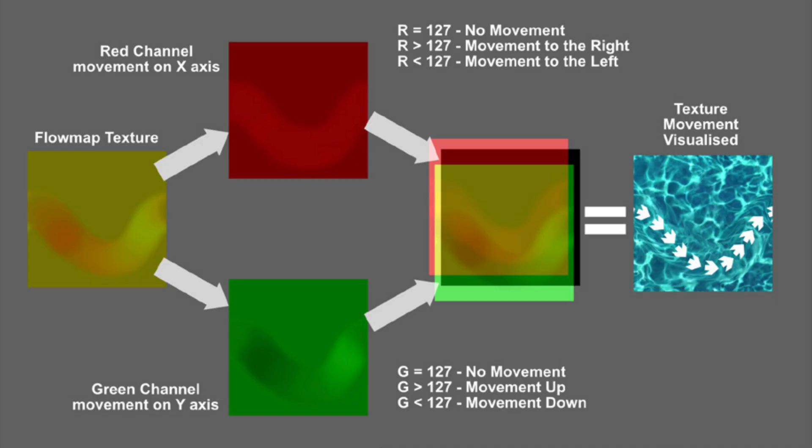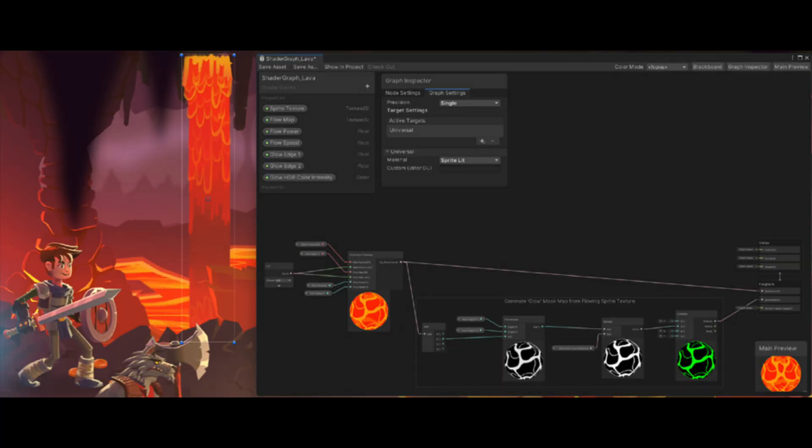Flow maps are textures that store directional information. The shader uses the flow map texture to control the direction of the main texture's UV coordinates. The colors red and green are used to indicate the XY direction that pixels flow in every frame, making the pixels of the main texture flow.